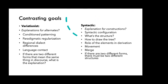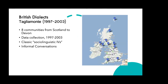Variationist sociolinguistics and syntactic theory have highly contrastive goals. Variationists want to explain why there are external alternatives in the language — they look for conditioned patterning, paradigmatic trends like regularization, regional dialect differences, and the impact of language contact. If there are two different forms that mean the same thing in discourse, what's the explanation? Syntacticians, on the other hand, are looking for structure: how to draw the tree, the role of each element in the derivation, whether it's movement or merging of constituents, and if there are two different forms, there must be two different structures. That said, I do believe that very large corpora, representing as long a trajectory in time as available, can be useful.